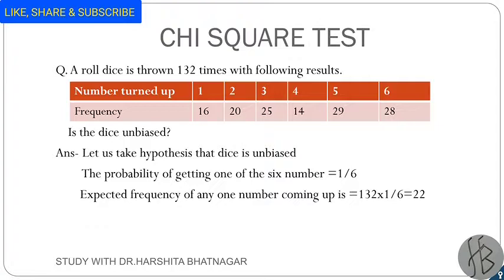Now we will calculate the expected frequencies. The probability of getting any one of the 6 numbers is 1/6. So the expected frequency will be 132 multiplied by 1/6, which equals 22.